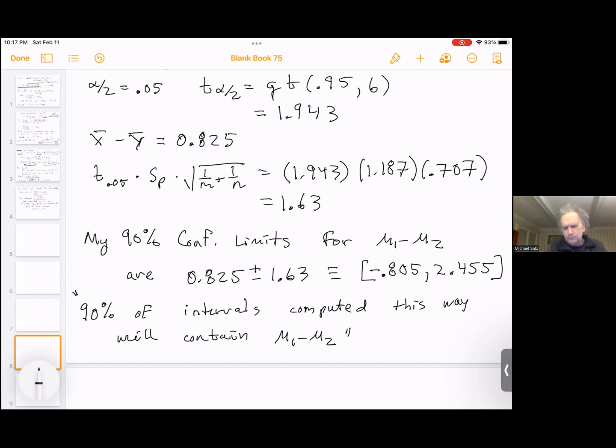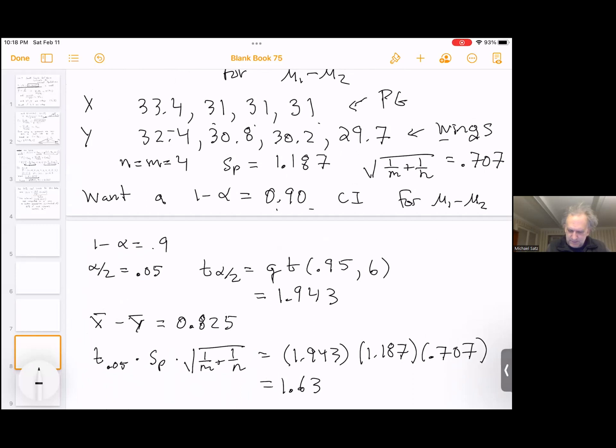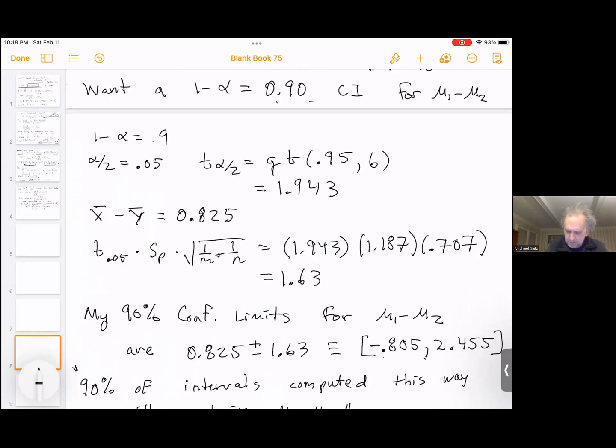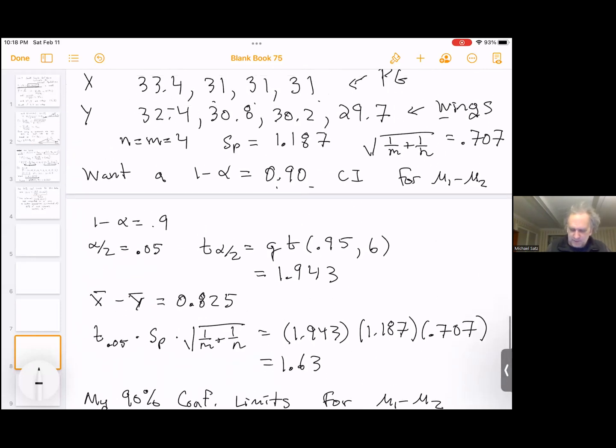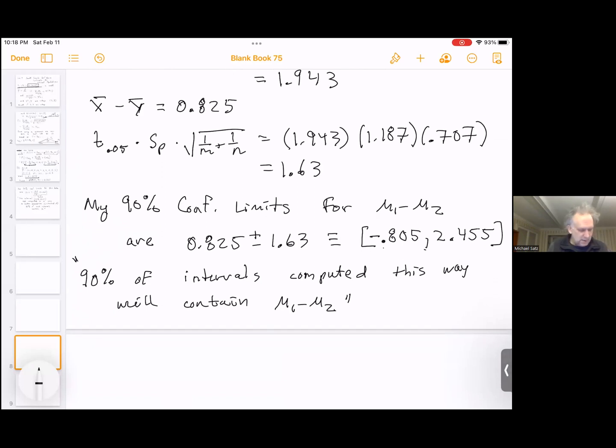In other words, the difference between points per game of these two different types of players ranges from the wings being slightly higher than the point guards, less than a point per game. But minus 0.8 means the wings are about 0.8 of a point better or higher, up to the point guards are about two and a half points higher. And that's with about a 90% confidence interval, confidence based on only these eight samples.